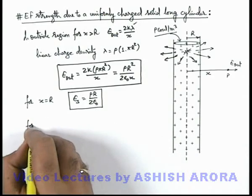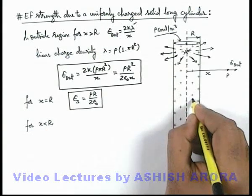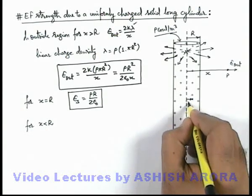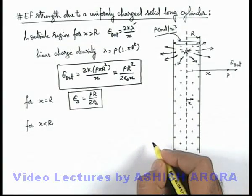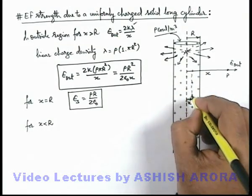Now if we talk about interior points, then for x less than R, say if I consider a point M over here which is located at a distance x from the central axis, then I can split the cylinder into two parts.